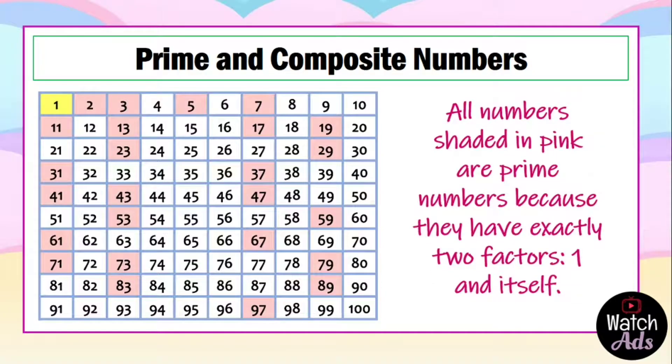All numbers shaded in pink are prime numbers because they have exactly two factors, 1 and itself. These are the prime numbers from 1 to 100: 2, 3, 5, 7, 11, 13, 17, 19, 23, 29, 31, 37, 41, 43, 47, 53, 59, 61, 67, 71, 73, 79, 83, 89, and 97.